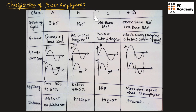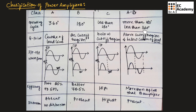Let us classify the power amplifiers based on different parameters. If we consider the operating cycle: for class A power amplifier, the output will be for 360 degrees; in class B power amplifier, the output is for 180 degrees; in class C power amplifier, the output is less than 180 degrees; and in class AB power amplifier, the output is more than 180 degrees and less than 360 degrees.